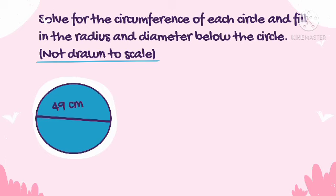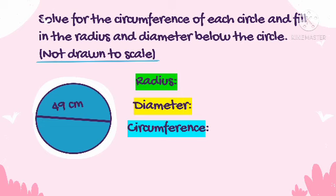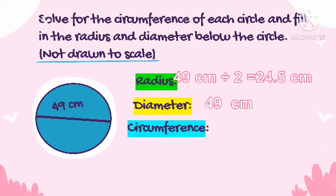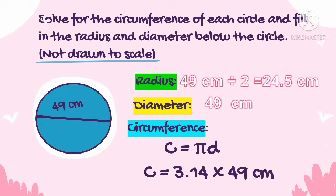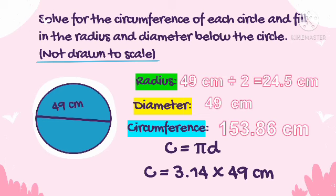Circle 4 has a diameter of 49 cm. Since diameter is given, we write 49 cm for the diameter. To find the radius, divide 49 by 2: the radius is 24.5 centimeters, since the radius is half the diameter. To find the circumference, since diameter is given, we use C = πD: C = 3.14 × 49 cm. The circumference of the circle is 153 and 86 hundredths cm.